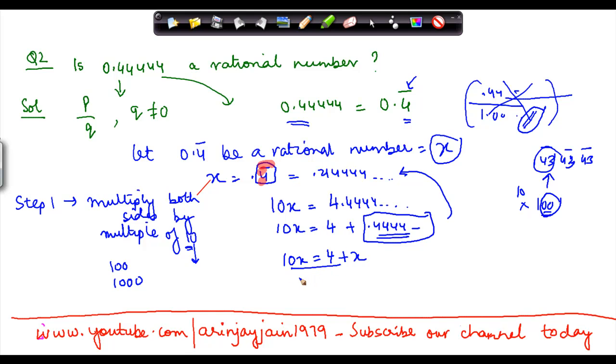If I solve these two equations, I get 10x minus x is equal to 4, or in other words, 9x is equal to 4, which means that x is equal to 4 divided by 9, which is a rational number.